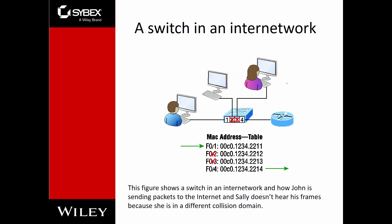In a switched internetwork, a switch works very similarly to a routing table, except it uses a MAC address table. It records MAC addresses so that it knows which interface to send the appropriate frame out so that it reaches the right person — unless it's a broadcast, in which case it goes to everyone.